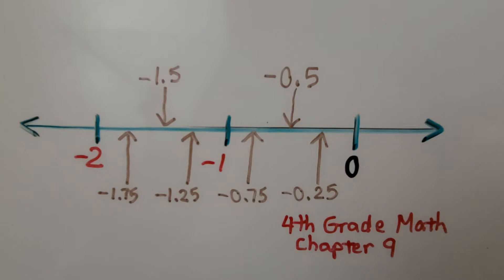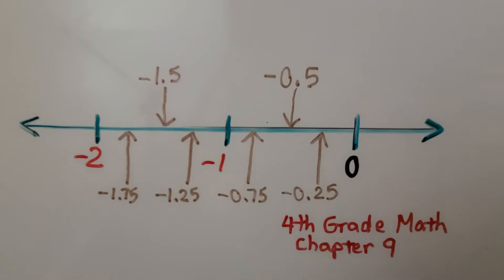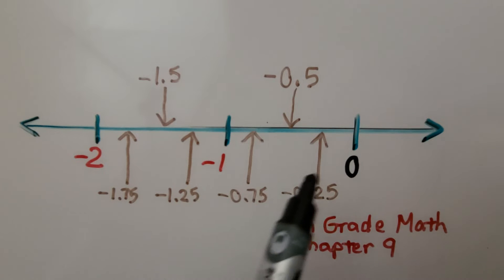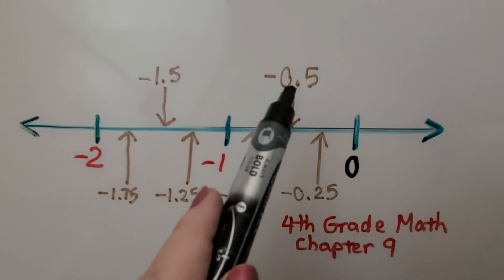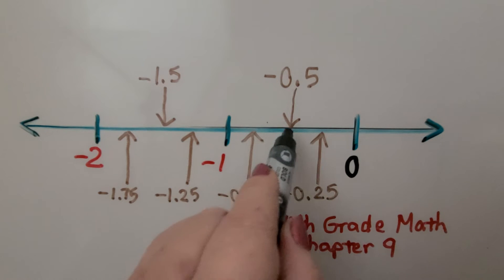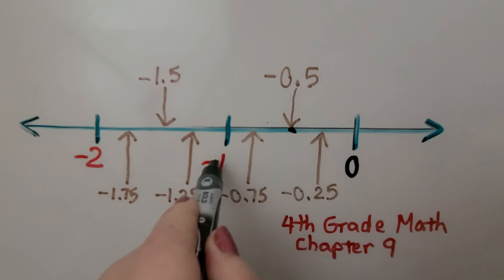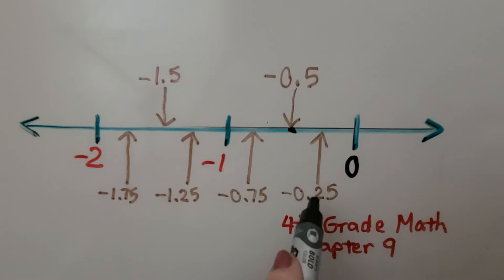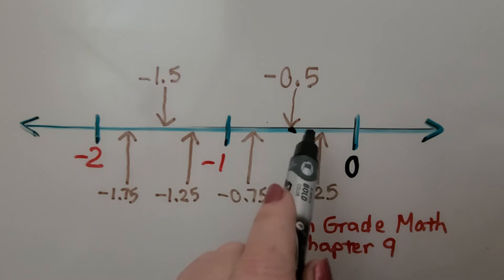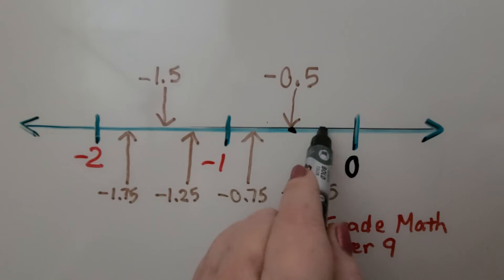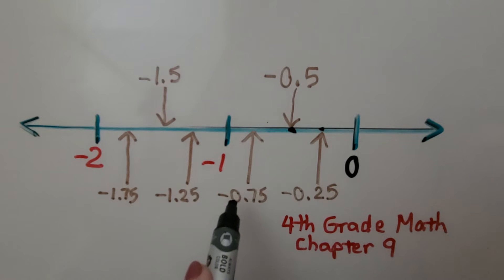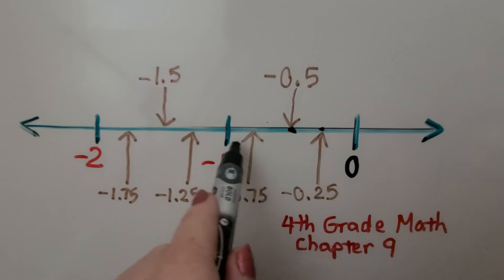Be careful when you're using a number line and you're dealing with decimals or fractions. We learned about fractions and decimals and their equivalents in fourth grade math chapter 9, and I'll have a link to those videos in the description. For example: here's zero, here's negative one. Point five — that's negative one-half — is halfway between zero and negative one. Twenty-five hundredths is one-fourth, between zero and one-half. Negative seventy-five hundredths is negative three-fourths, between negative one-half and negative one.